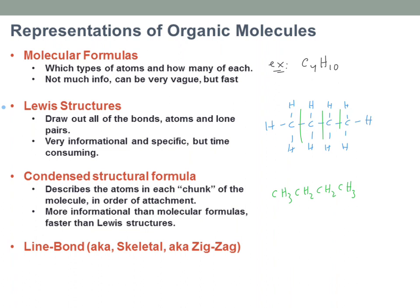Now this last one — the line bond drawing, also known as the skeletal or zigzag — is what we're focusing on. Drawing butane: all four representations are butane, but with the line bond drawing you just draw a zigzag that looks like a lightning bolt. This is supposed to mean the exact same thing as the condensed structural formula and the Lewis structure.